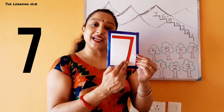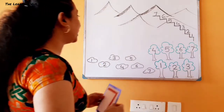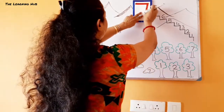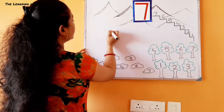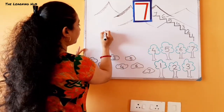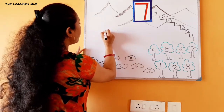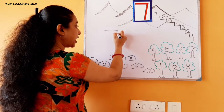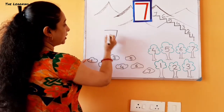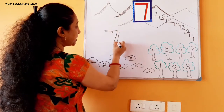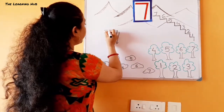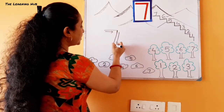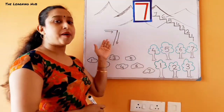Now look at the board - how to write number seven. First I'm putting two dots over here. Then start from the left dot, draw a sleeping line from left side to right side, then draw a slanting line from top to bottom left side. Sleeping line and slanting line - repeat this to make the number seven.